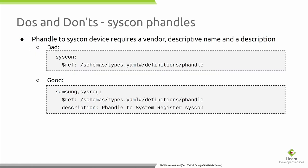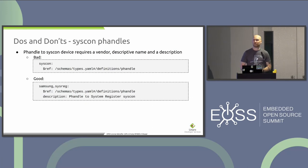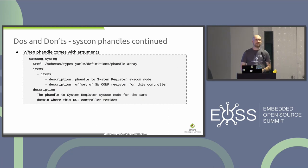About syscon consumers — the other side from the provider. A property simply called 'syscon' is too generic and not specific enough. You need a vendor prefix and a descriptive name — for example, 'qcom,sysreg' for system register, with a description like 'phandle to the system register region'. It can also be described as a phandle-array where the first item is the phandle and the second is an offset. Several drivers already use this pattern.